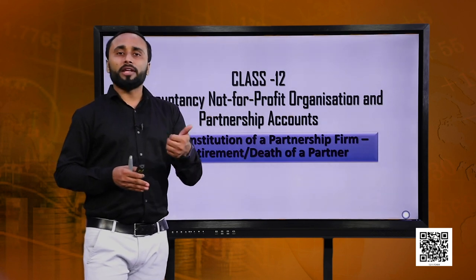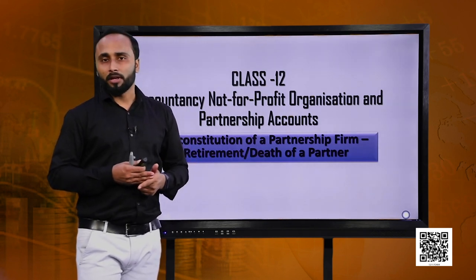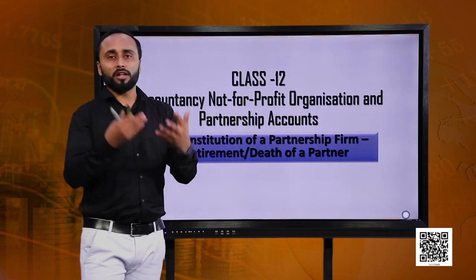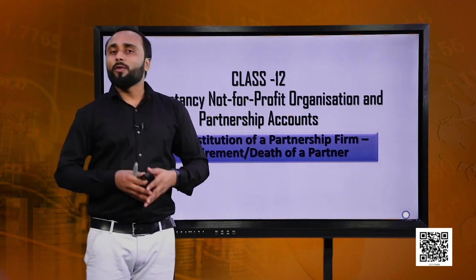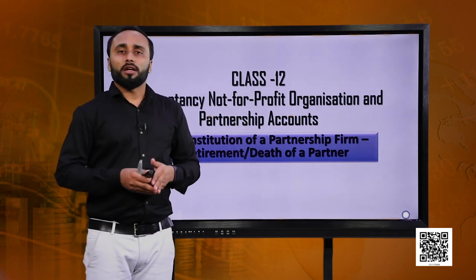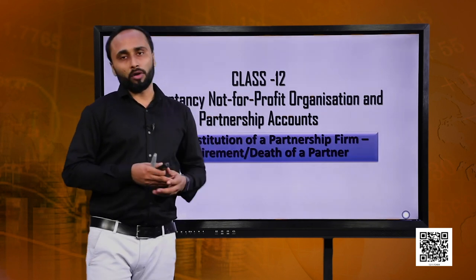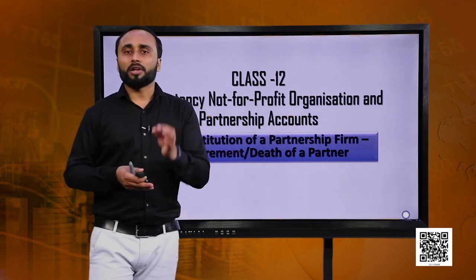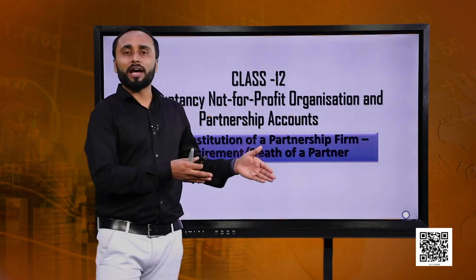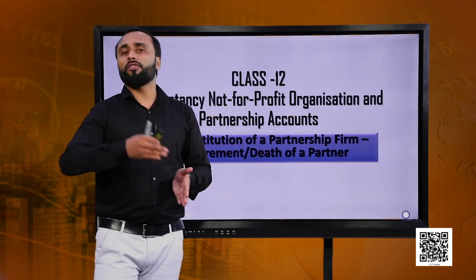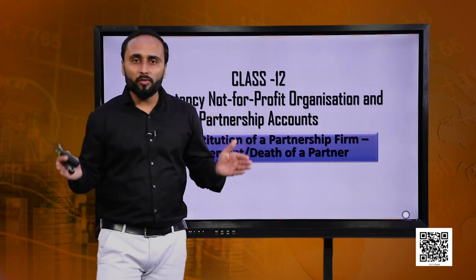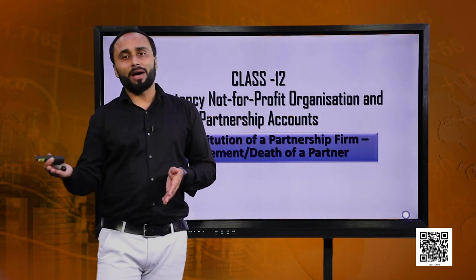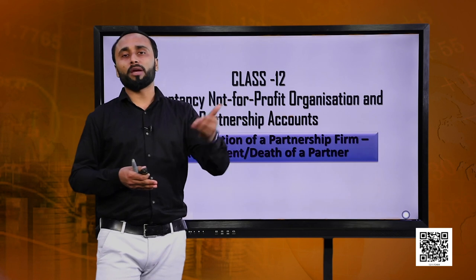For example, we talked about calculating the new profit sharing ratio and the gaining ratio. We talked about calculating the amount of goodwill to be given to the retiring partner and the journal entries for that. We talked about making revaluation of assets and liabilities, then adjustments for accumulated profits and losses. Finally, we also saw how to make entries for the amount due to the retiring partner.